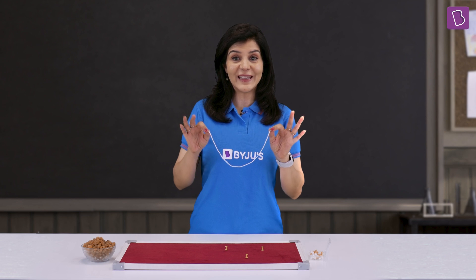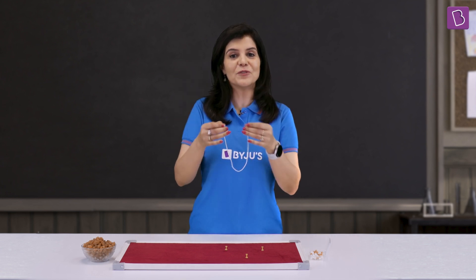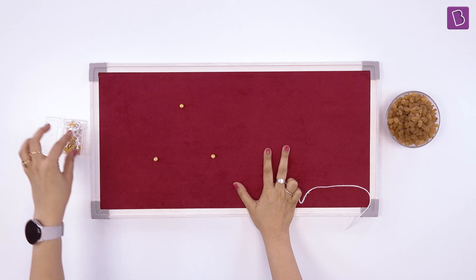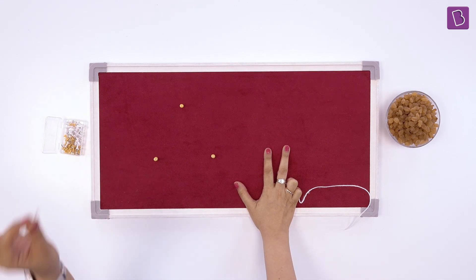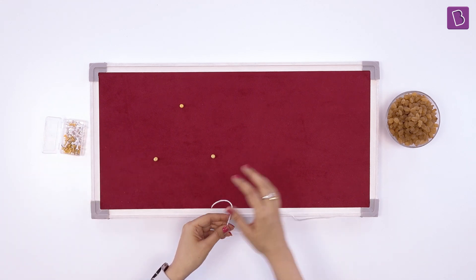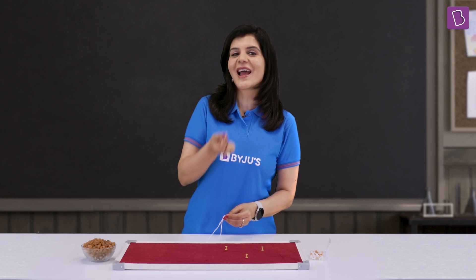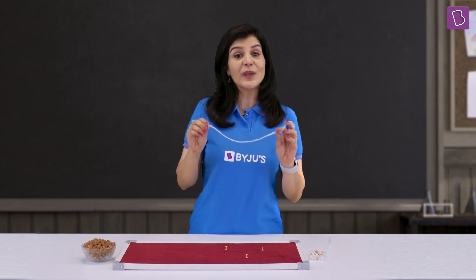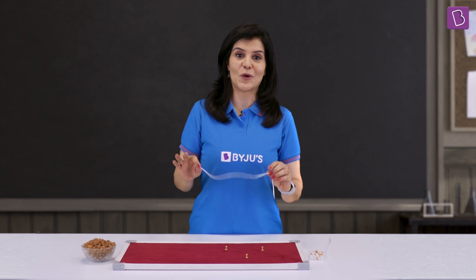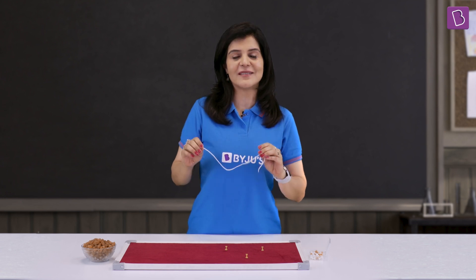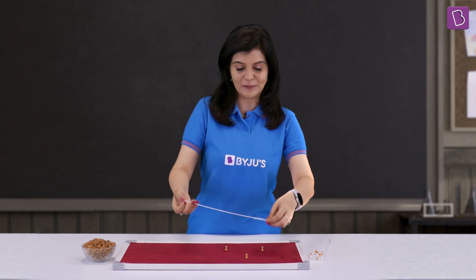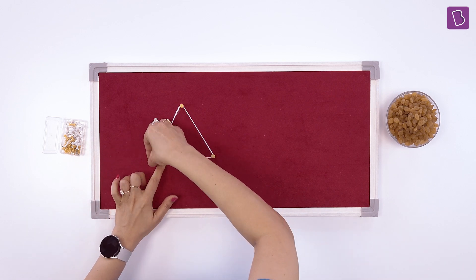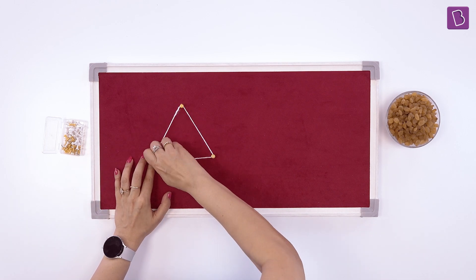All we need is a piece of string to mimic our fence and a bulletin board with its pins, and maybe some raisins. I'll show you. We can make any shape we want, such as a triangle. I put the string around the pins and there we have a triangle.